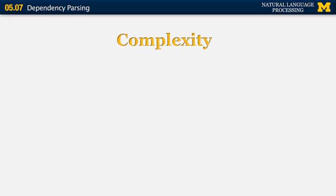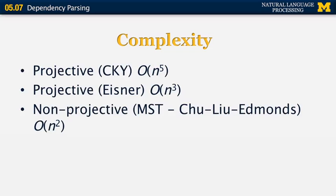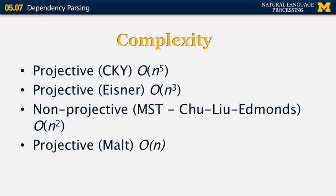Comparing the complexities of different dependency parsing algorithms: the projective CKY method is O(n^5); Eisner's improved version is cubic O(n^3); non-projective MST using Chu-Liu-Edmonds is quadratic O(n^2); and the MALT parser achieves linear complexity O(n).